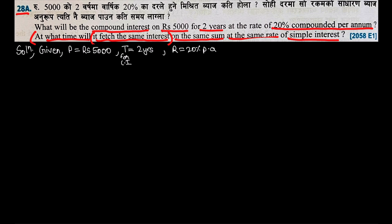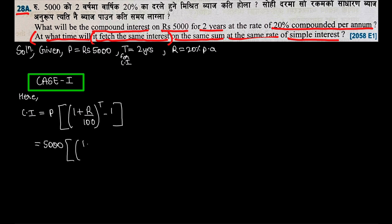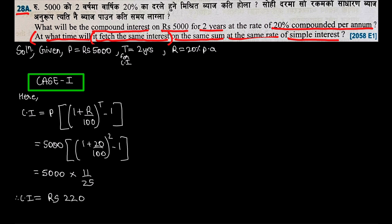Case 1: Compound Interest. Using the formula CI = P × [(1 + r/100)^t − 1], with P = 5000, r = 20, and t = 2 years: CI = 5000 × [(1 + 20/100)^2 − 1] = 5000 × [(11/10)^2 − 1]. Calculating directly, this gives CI = Rs.2200.